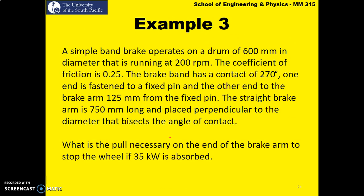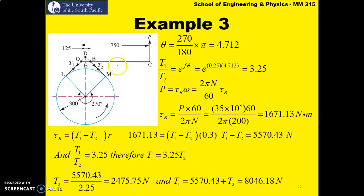Let's look at Example 3. The schematic of the band brake will always be given. The drum diameter is 600 mm rotating at 200 RPM, the coefficient of friction is 0.25, and the lap angle is 270 degrees. We need to calculate the pull necessary for the brake to absorb 35 kilowatts of power. Force P is acting at the lever, the drum rotates counterclockwise, so at point L the band is pulled — this becomes the tight side and the other becomes the slack side.